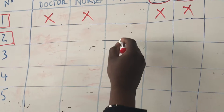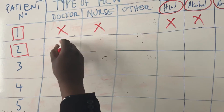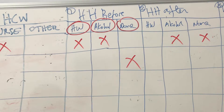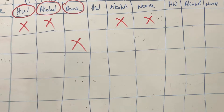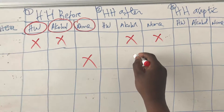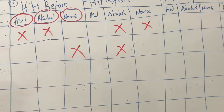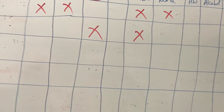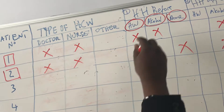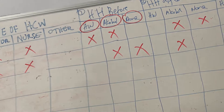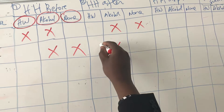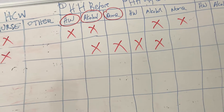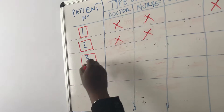If the doctor does not wash his hands before patient contact for patient two, you record no positive action taken. After patient contact, let's say he used alcohol hand rub. There was also a nurse there who used alcohol before contact, and after patient contact the nurse used hand washing with soap and water.